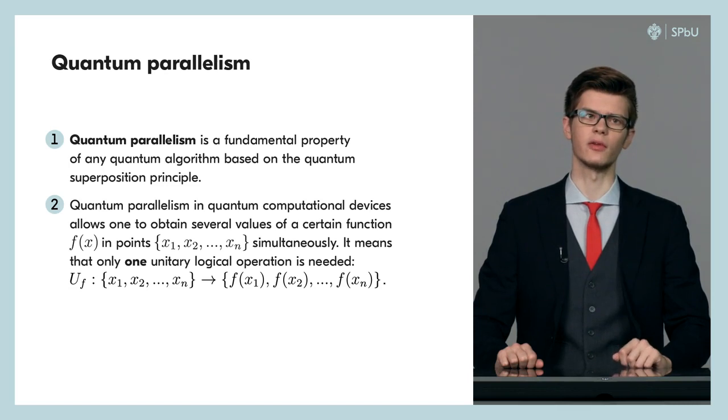Let's illustrate the idea of quantum parallelism with a simple example. Consider a function f(x) with a single bit range and a single bit domain. The argument x accepts two values, 0 and 1, and also the function f can be equal to 0 or 1.